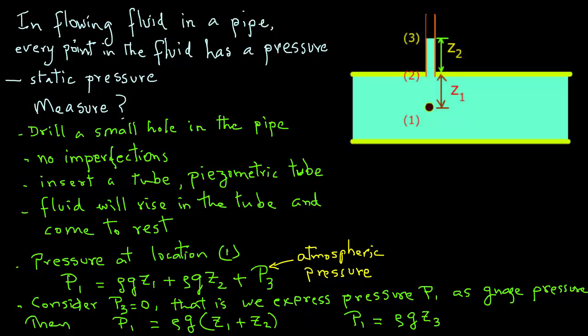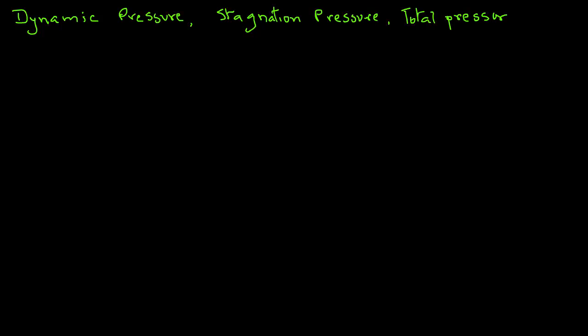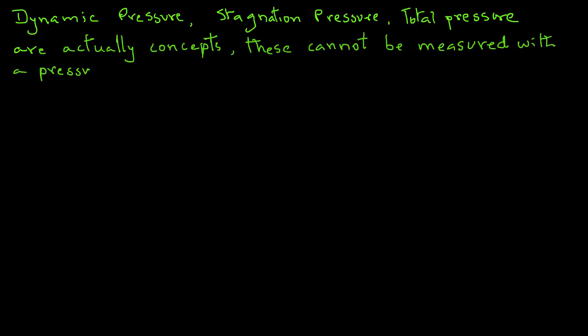Next, let's look at the three other pressure terms: dynamic pressure, stagnation pressure, and total pressure. Interestingly, these are essentially concepts — they are not pressures you can actually measure with a pressure sensor. Only static pressure can be measured directly. These three terms appear due to the Bernoulli equation.